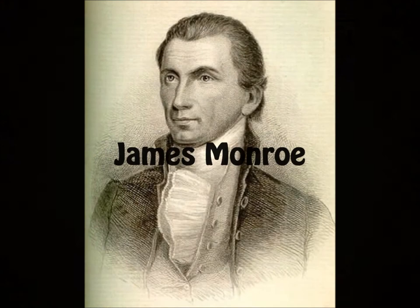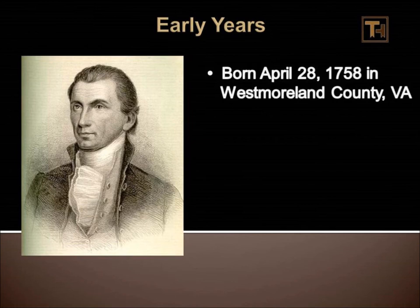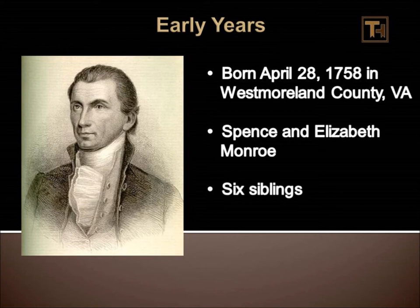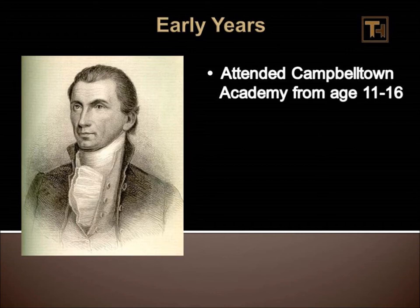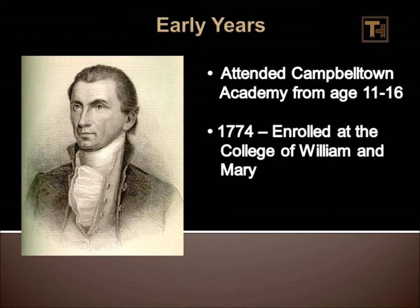James Monroe was born April 28, 1758 in Westmoreland County, Virginia. His parents were Spence and Elizabeth Monroe, and he had six siblings. James Monroe was taught at home until the age of 11, at which time he began attending Campbelltown Academy. He attended that school until age 16. In 1774, James Monroe enrolled at the College of William and Mary.